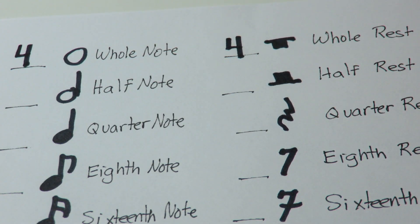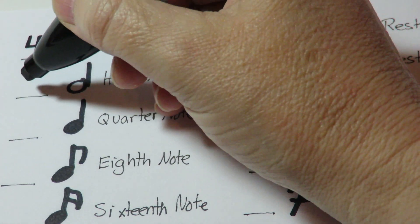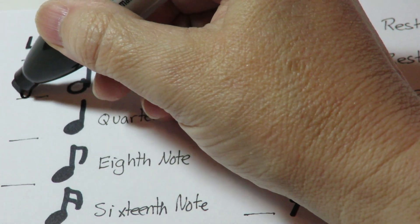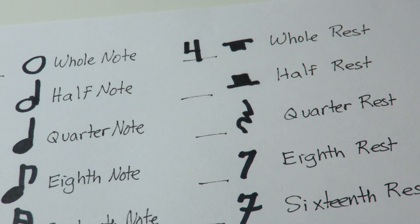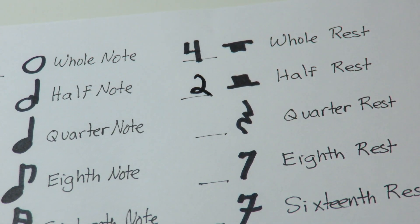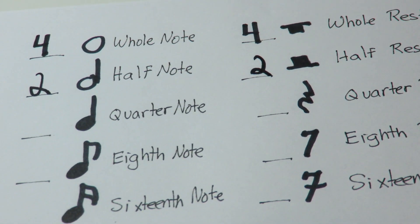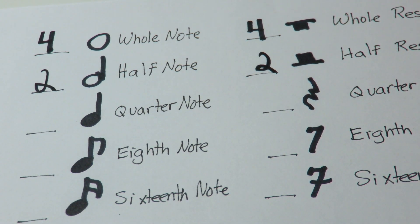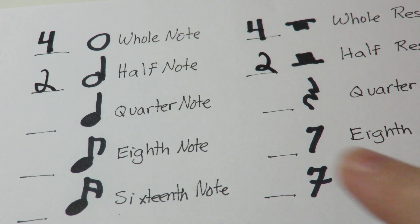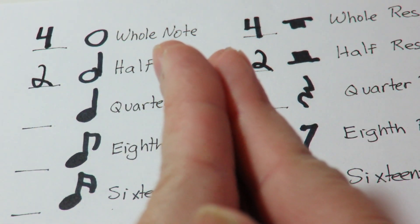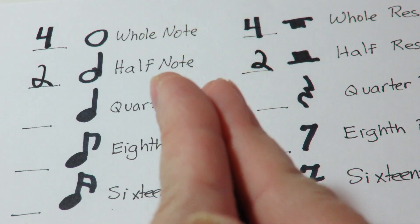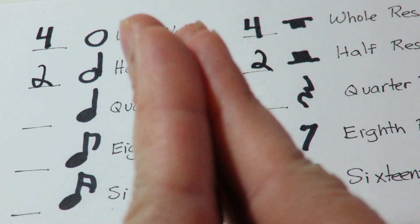Half notes get two beats of sound and half rests get two beats of silence. Make sure that you have the two written to the left of the symbols. If we play a half note in class, we will clap and hold for one and two and.